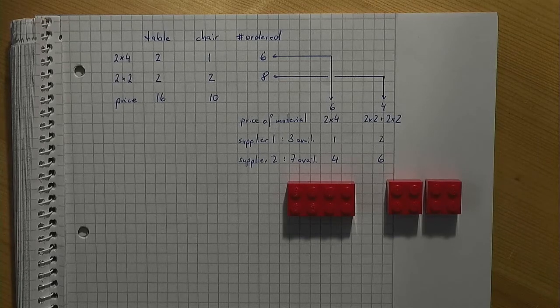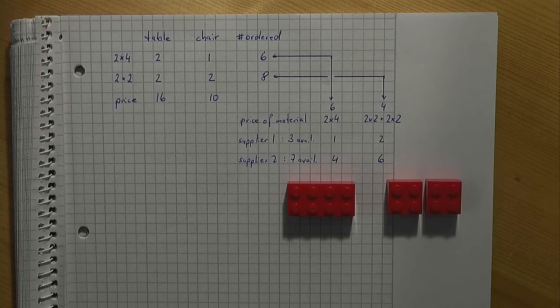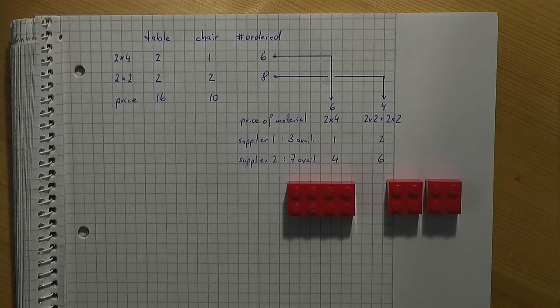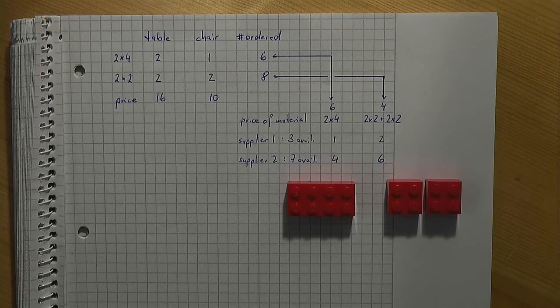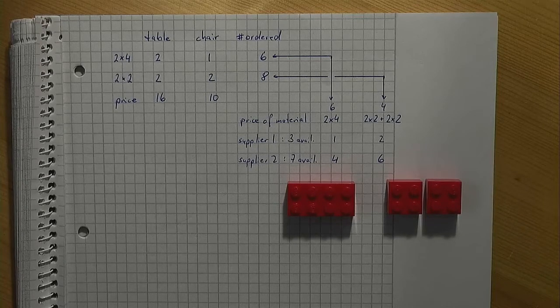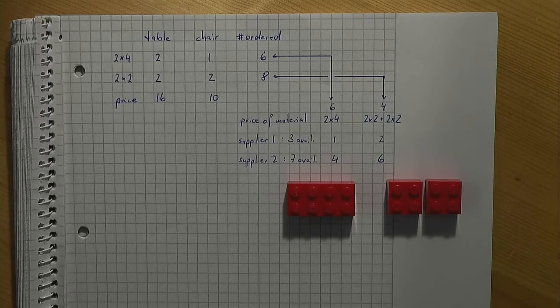The price for a 2x4 depends on the supplier. If we buy a pair of 2x2s, that is, request that a 2x4 is cut into two, a little extra is charged, so that the price for a pair of 2x2s is different from the price of a 2x4.